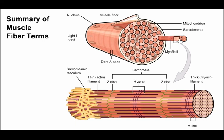A muscle fiber has multiple myofibrils. If you pull out a single myofibril, you can see the M-line in the middle, the H zone, and the Z-discs. The thick filaments are anchored at the M-line; the thin filaments are anchored at the Z-discs. Each myofibril is surrounded by sarcoplasmic reticulum, which is where calcium is stored when the muscle is at rest — essentially folded membranes all connected together, just like endoplasmic reticulum.